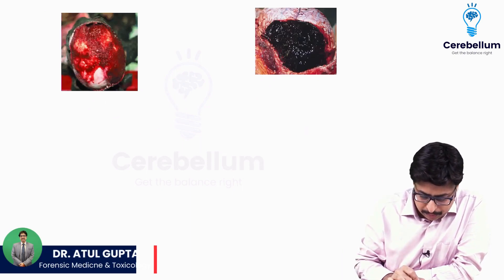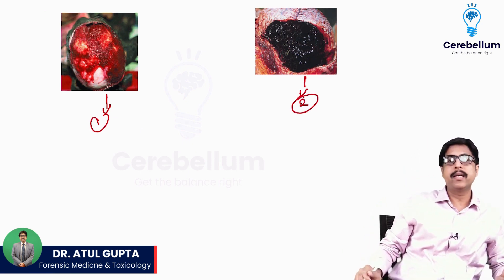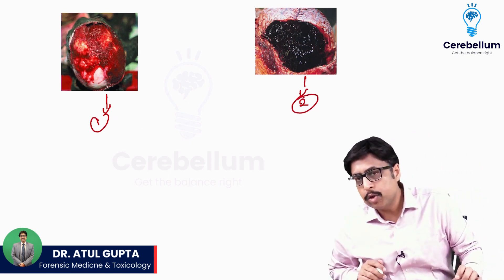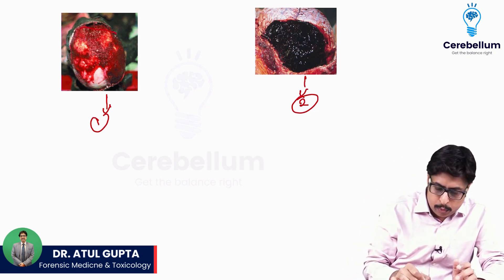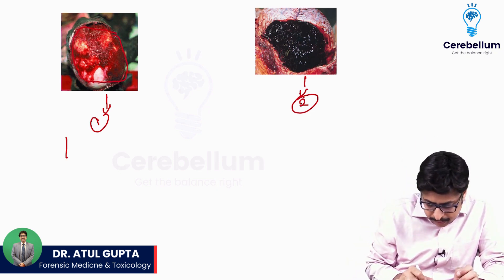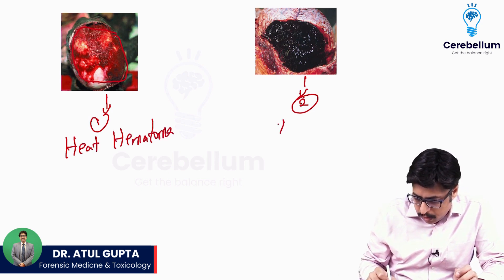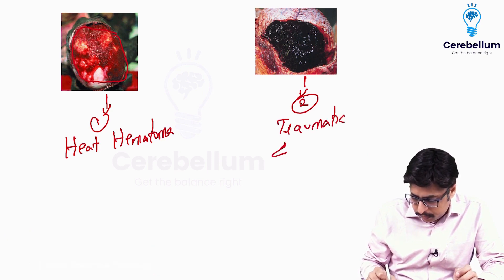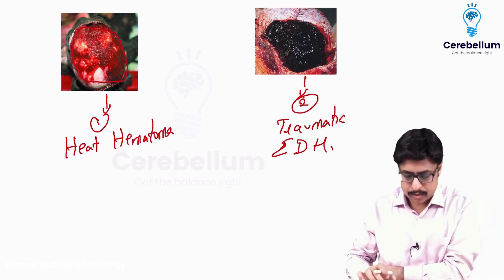Let us see — if I call this number 1 and this number 2, can you tell me which one is heat hematoma and which one is hematoma due to trauma? Obviously this one is diffuse, so this is heat hematoma, whereas this is traumatic EDH.